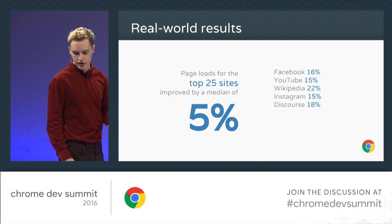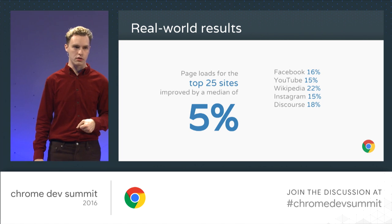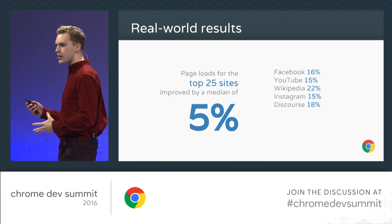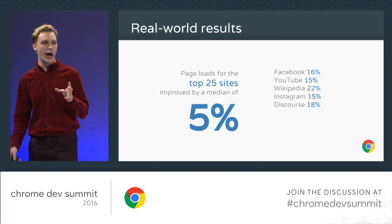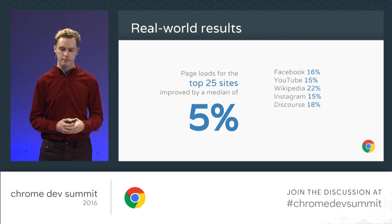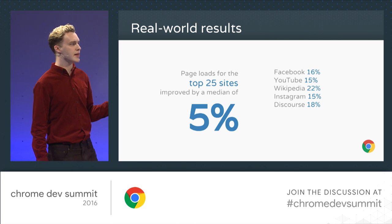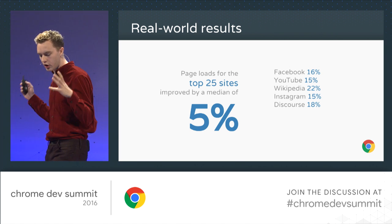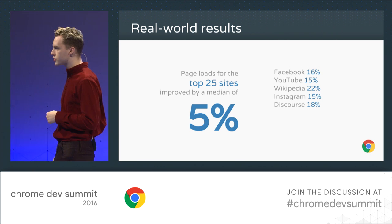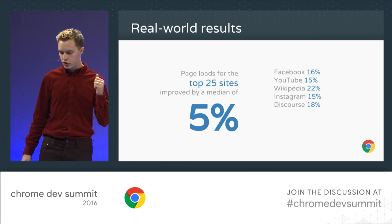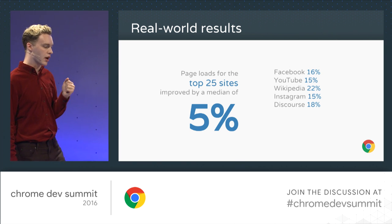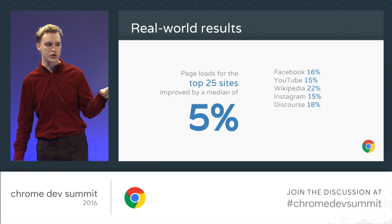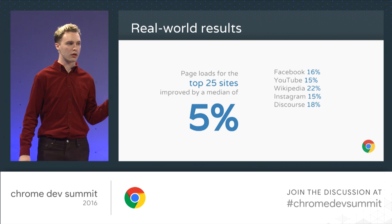We've improved the median page load for the top 25 websites we measure by 5%, which in some sense seems small. But if you multiply that savings across every time somebody around the world accesses one of these sites, 5% is huge — an incredibly large savings. The improvements on some pages were even higher. Facebook, YouTube, Wikipedia, Instagram, and Discourse all saw big performance improvements, and most of these came from improvements in the runtime and parser, not necessarily our optimizing compilers.